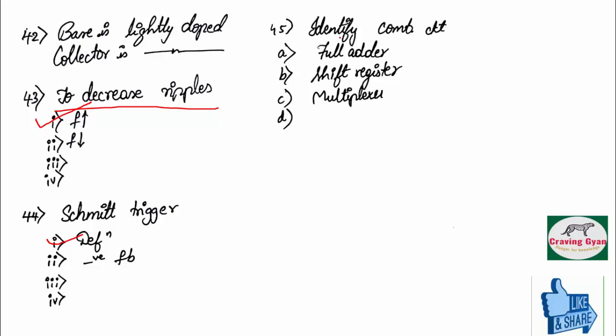Forty-fifth question, you have to identify the combinational circuits. First option, they have given full adder. Second option, shift register. Third option, multiplexer and so on.